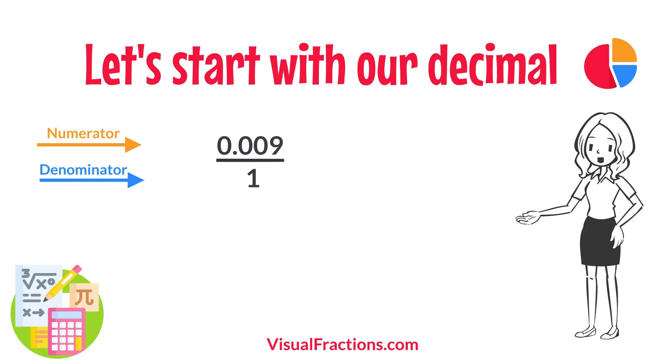This sets up the conversion process where we multiply both the numerator, 0.009, and the denominator, 1, by 1,000 because there are three decimal places.